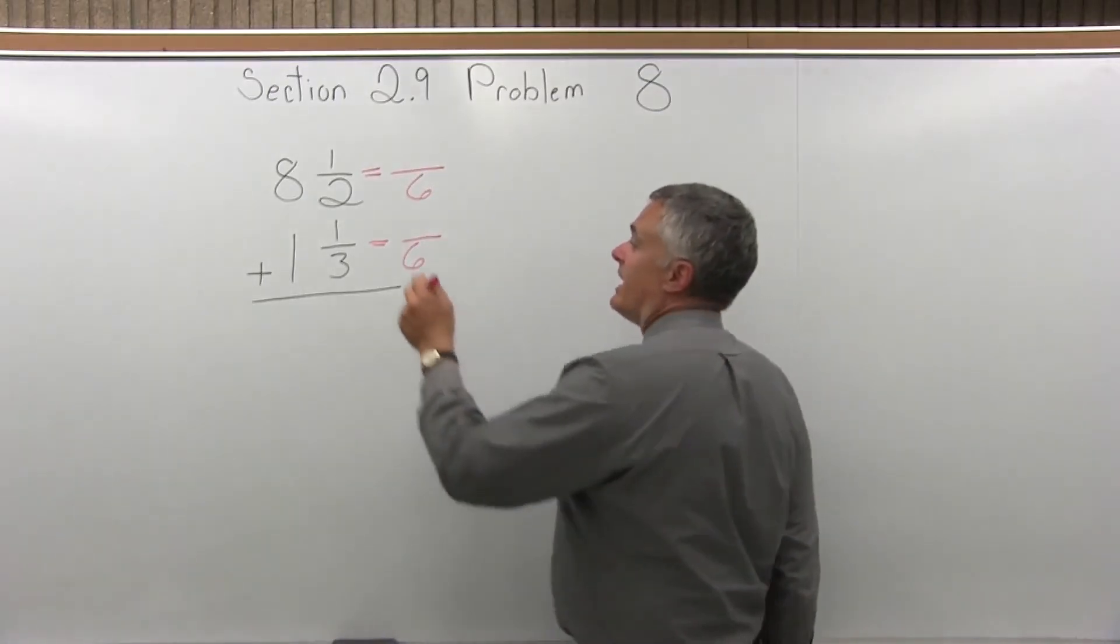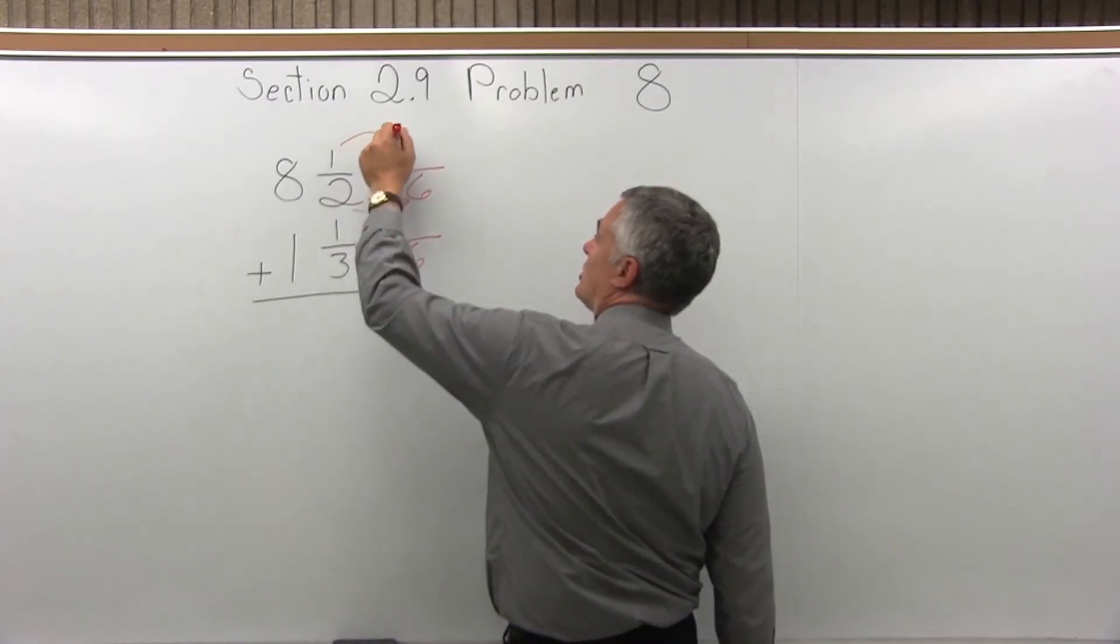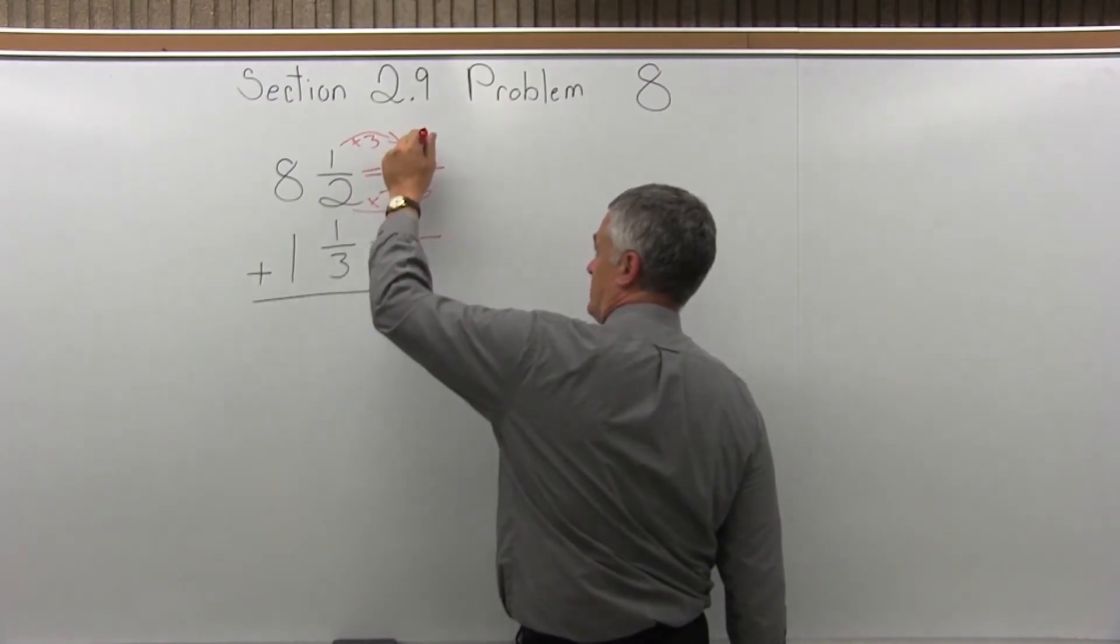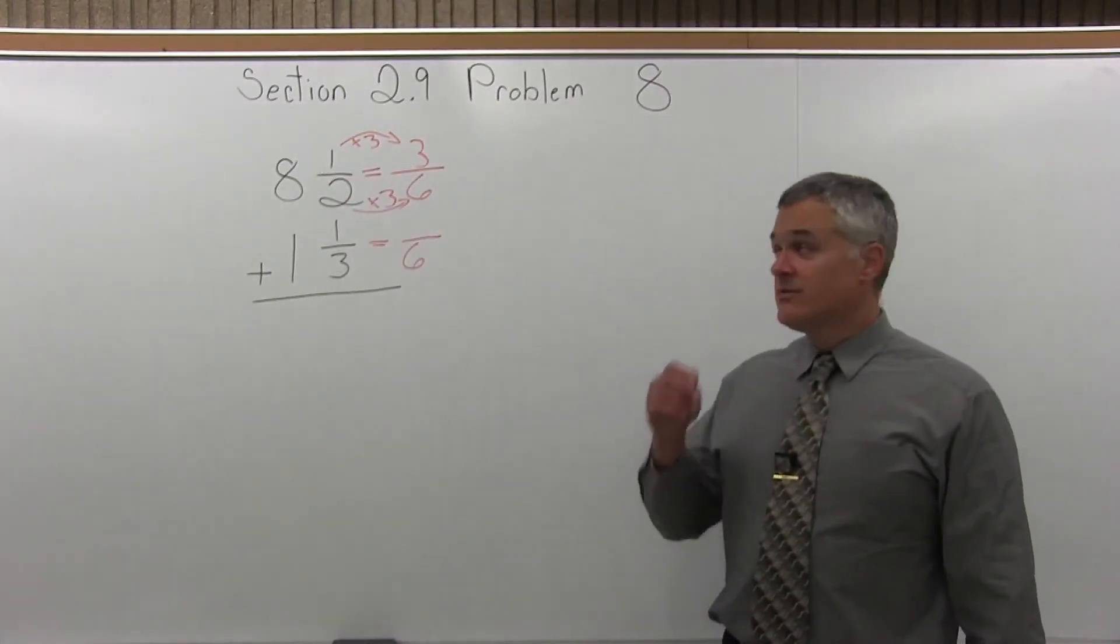Now, 2 times some value is 6, well it must be 2 times 3, so the top must be times the same value. The numerator of 1 times 3 is 3. So 3 over 6 really is a half, it's just written in a different form.